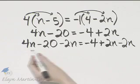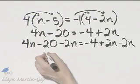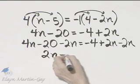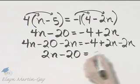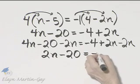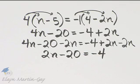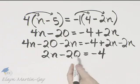And then what happens on the left side, 4n minus 2n, that is 2n minus 20, is equal to the 2n subtract out and I have negative 4. Now notice I have a variable term, constant, constant.